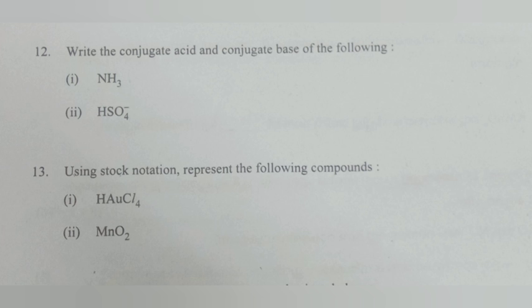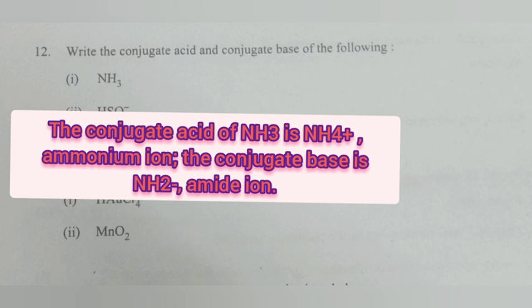Question 12: Write the conjugate acid and conjugate base of the following. Part 1: NH3. Answer: The conjugate acid of NH3 is NH4+, ammonium ion. The conjugate base is NH2-, amide ion.